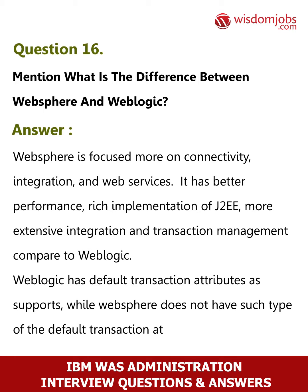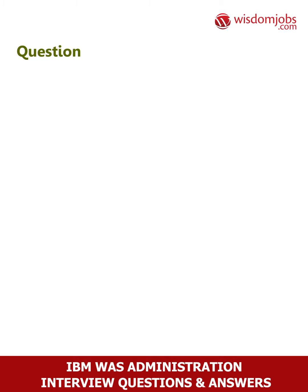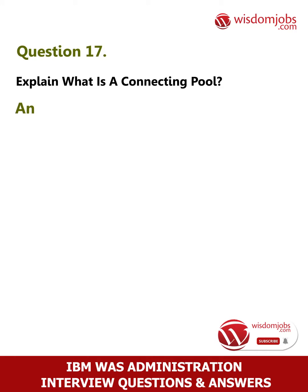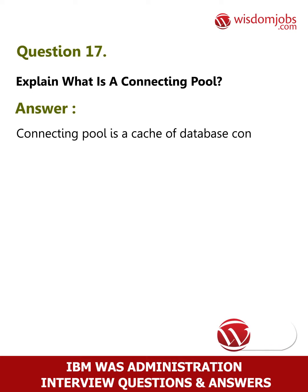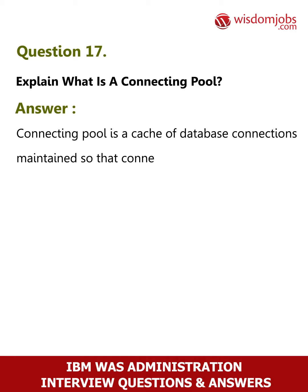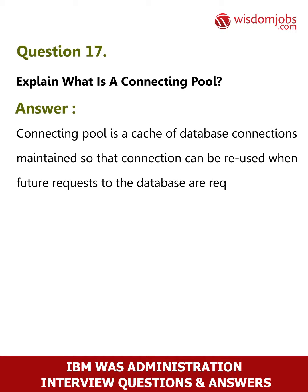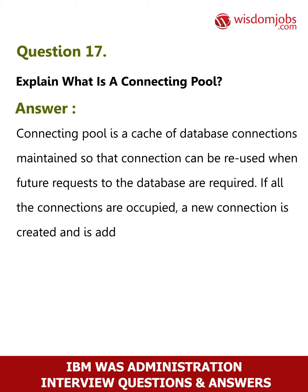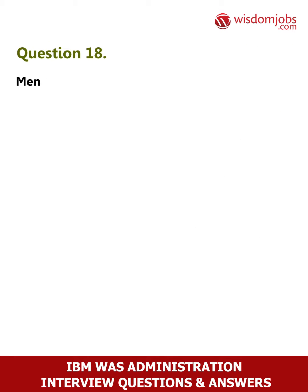Question 17: Explain what is a connection pool. Answer: A connection pool is a cache of database connections maintained so that connections can be reused when future requests to the database are required. If all the connections are occupied, a new connection is created and added to the pool.